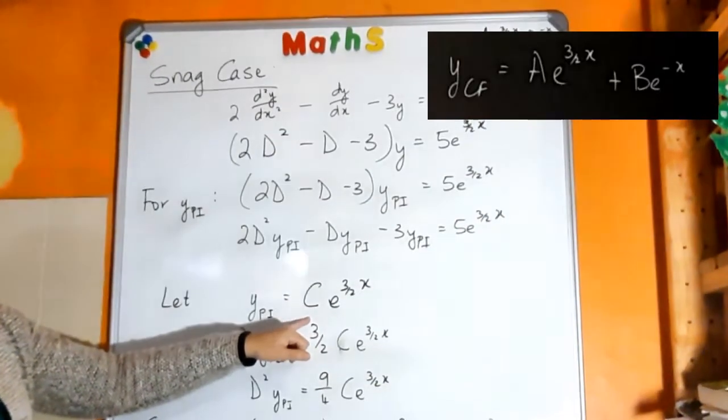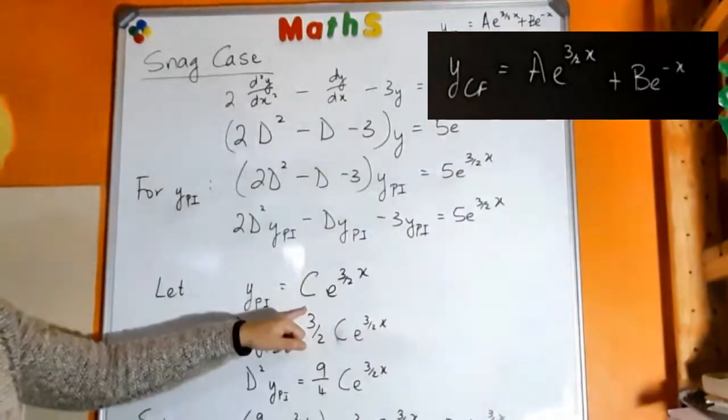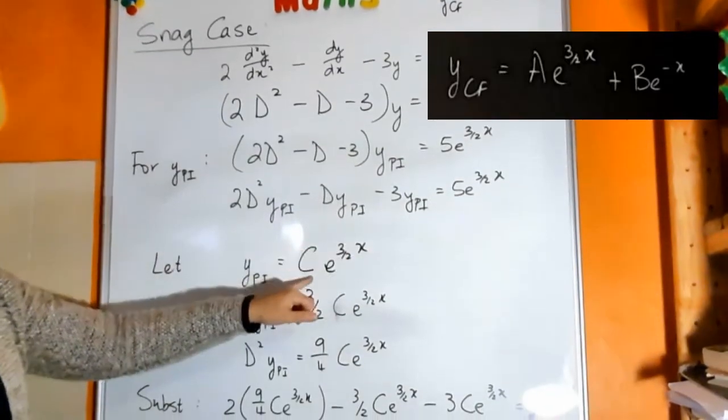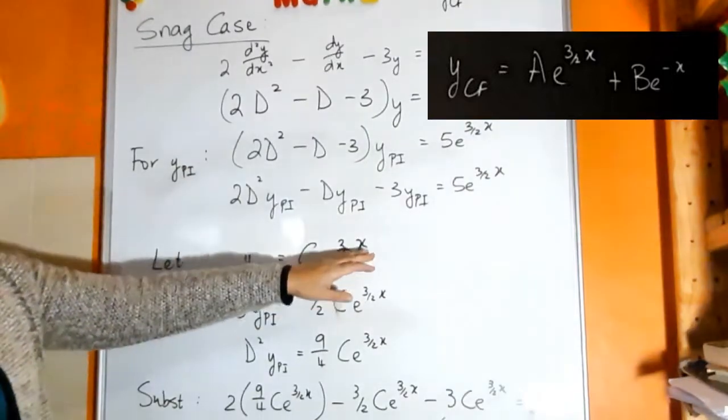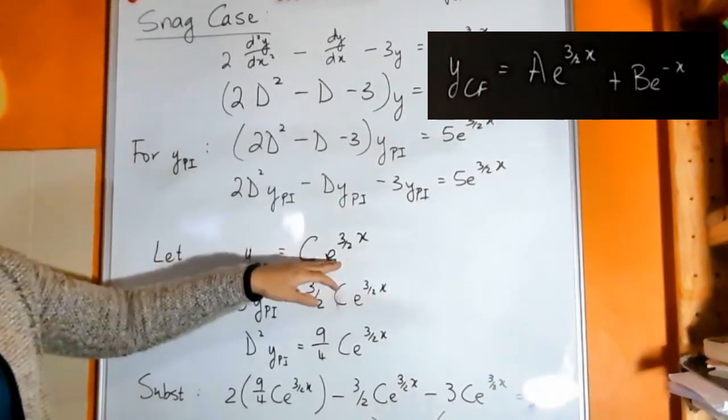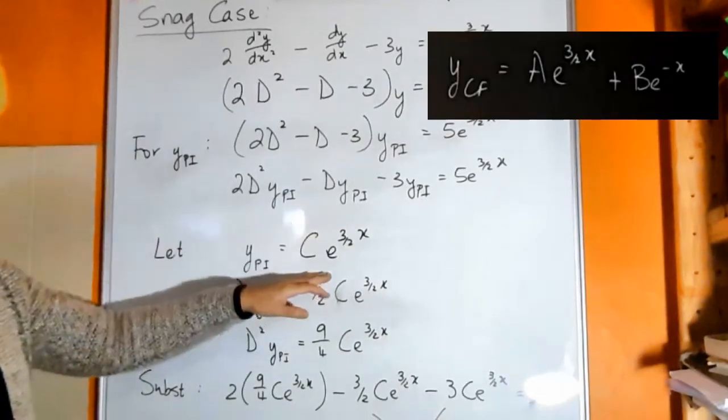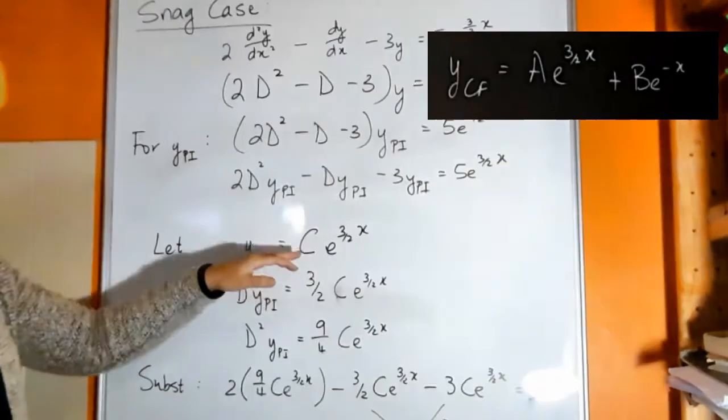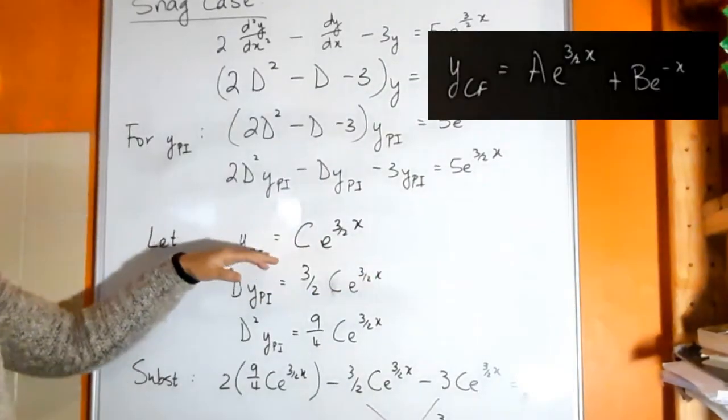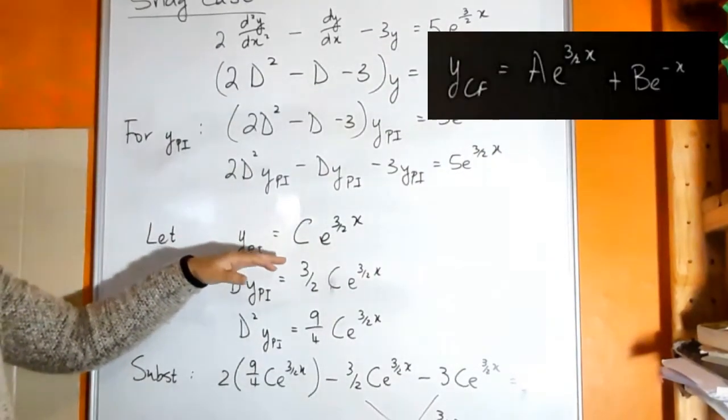So the letters don't really matter, they're just placeholders, because you don't know what those values are. But the form both have an exponential to the power 3 over 2x. So that power is the same, so it means that the form of those two terms are the same. So you cannot use this trial function here.